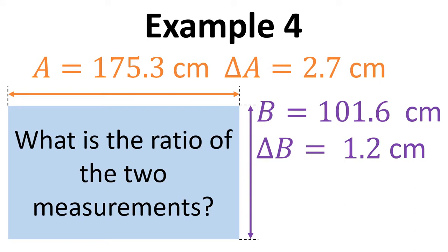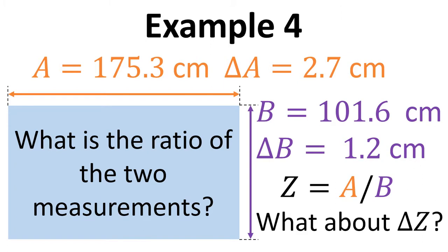And this time I want to ask the question, what's the ratio of those two measurements? So we need Z equals A divided by B. We also want to know what delta Z is, so what's the uncertainty in Z?